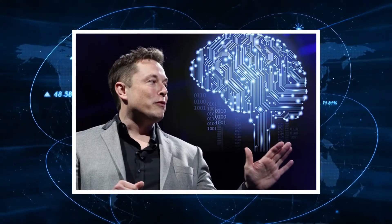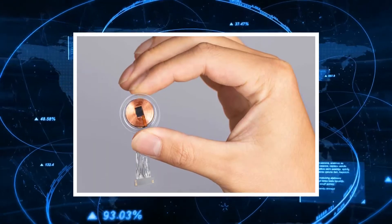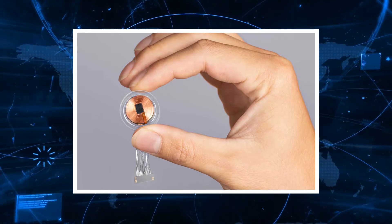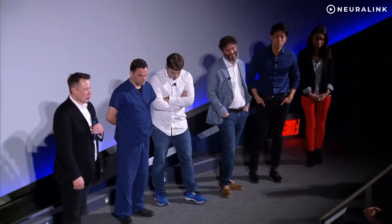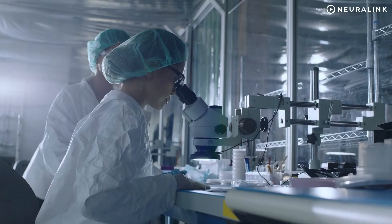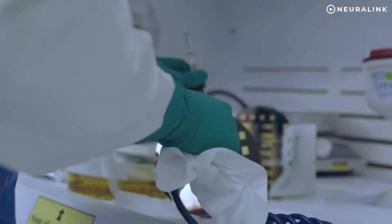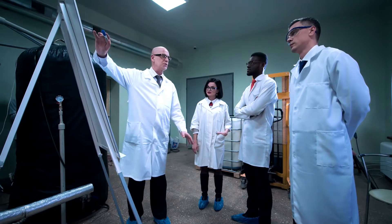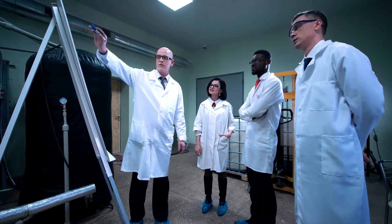Neuralink is a neurotech startup company developing an implantable brain-machine interface. Elon Musk co-founded this company with half a dozen professors, researchers, and industry experts in 2016. With its headquarters in San Francisco, California, the company was launched in 2016 and first publicly reported in March of 2017. Since it started operating, the company has hired several high-profile neuroscientists from various universities.